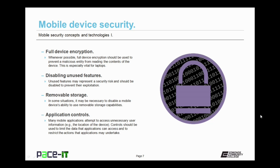Full device encryption should be used whenever possible. Full device encryption will prevent a malicious entity from reading the contents of a device if they steal it. This is especially vital for laptops. A mobile security technique that should be used for device hardening is disabling unused features. Unused features may represent a security risk and should be disabled to prevent their exploitation. In some situations, it may be necessary to disable a mobile device's ability to use removable storage.